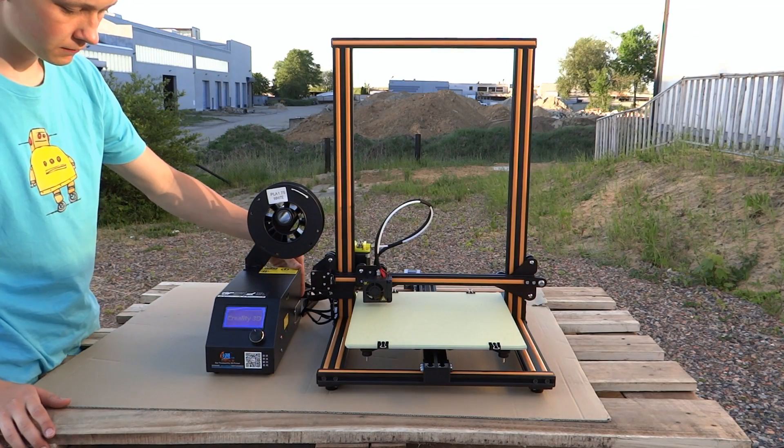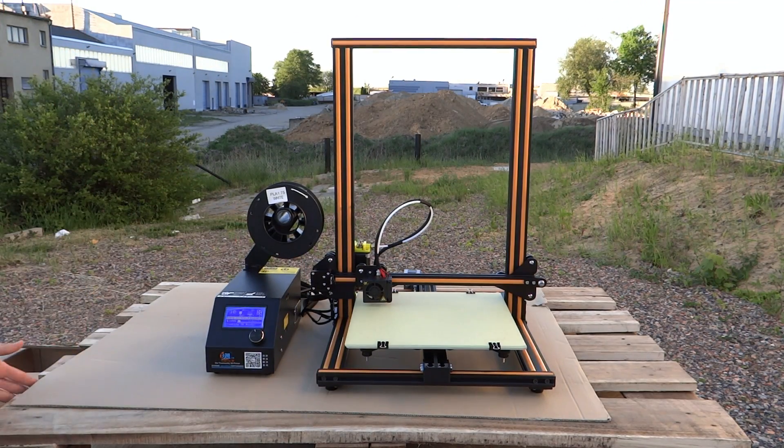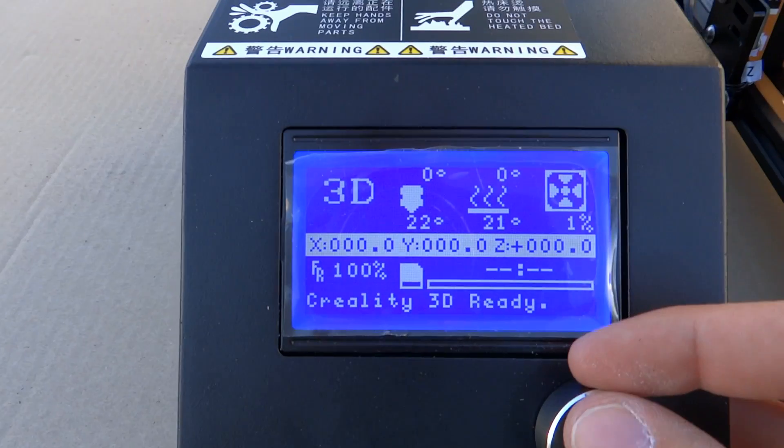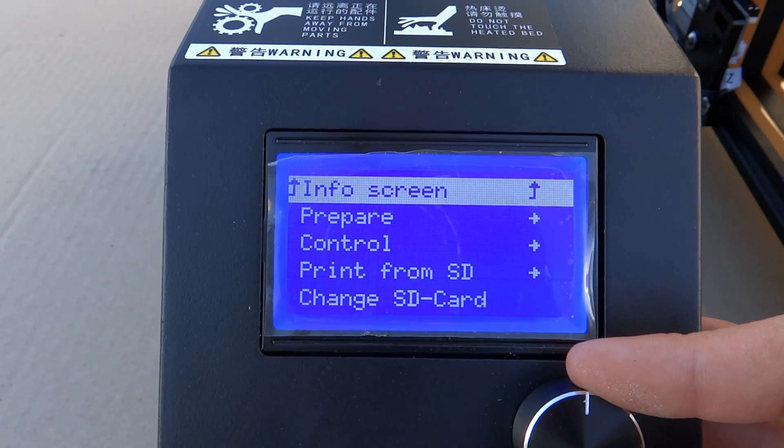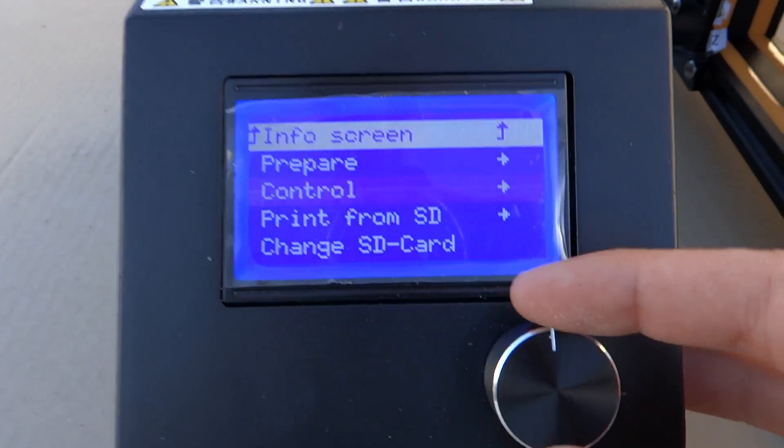It's time to turn our printer on with switch on the back of it. If everything is ok, we should see text on the screen. Here we have standard menu as in almost any printer. And this knob works so good.